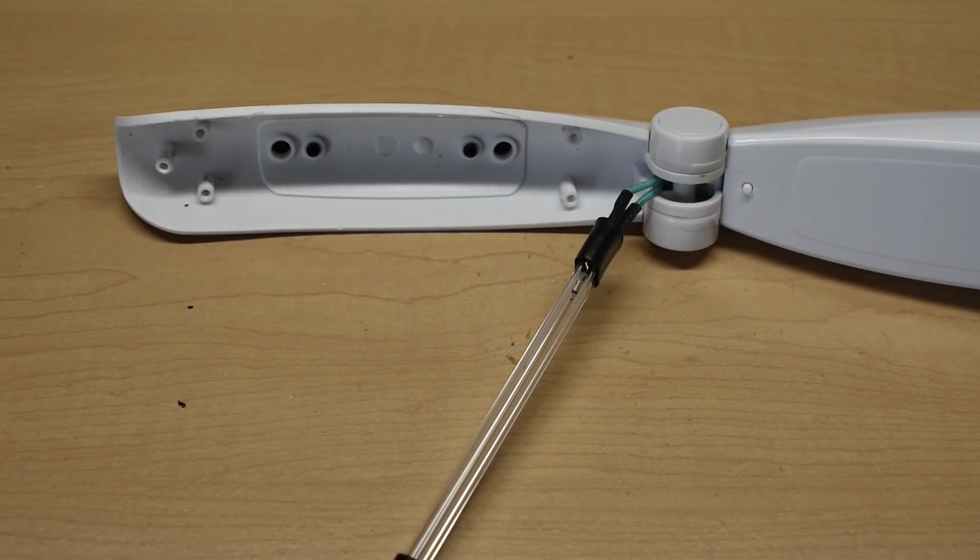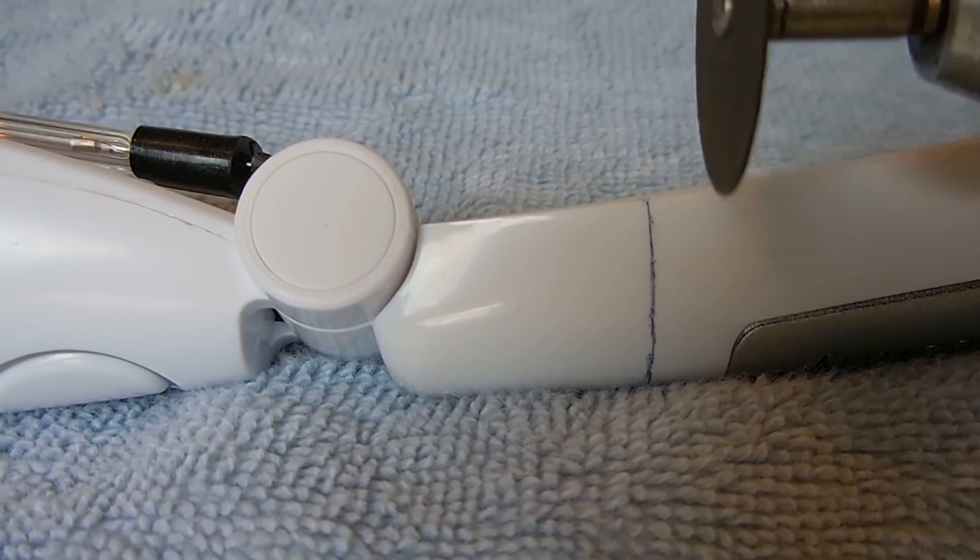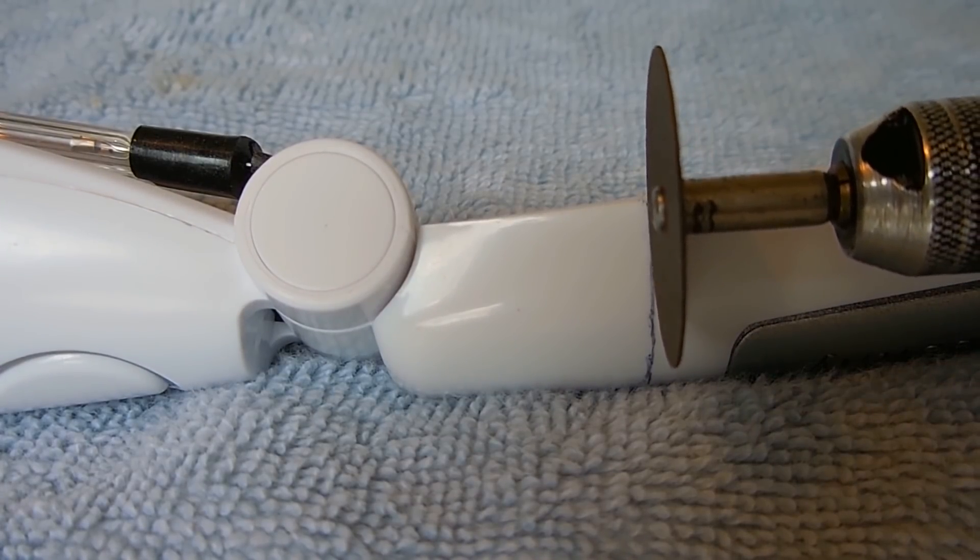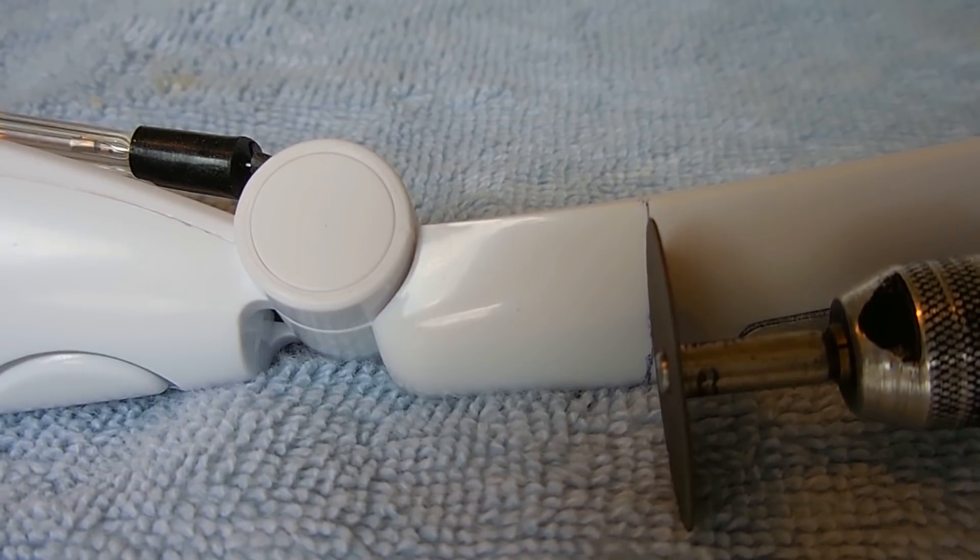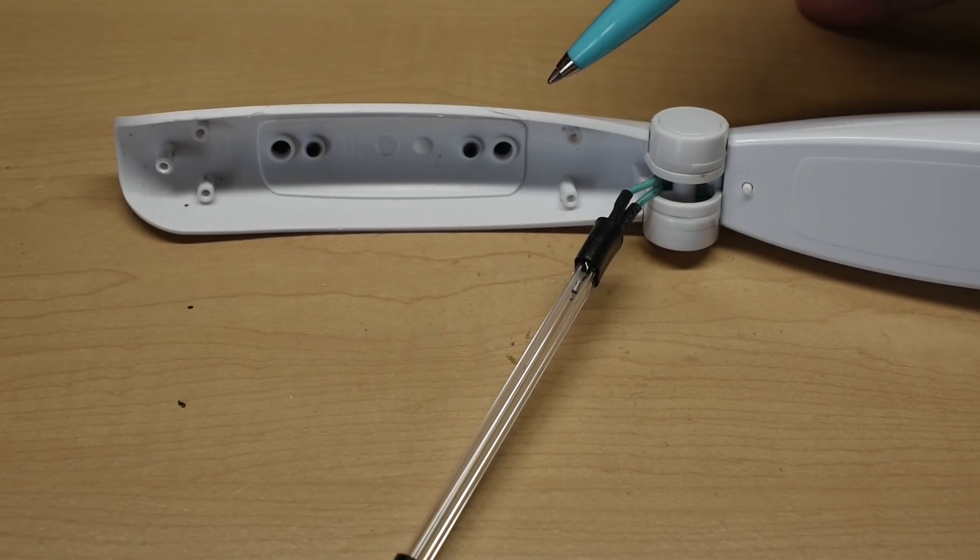and then what I did is I used a Dremel with a cutoff wheel to make a nice clean cut all the way around. You can use a 32 tooth per inch hacksaw blade. Just make a nice clean cut when you're done. Sand all the edges.